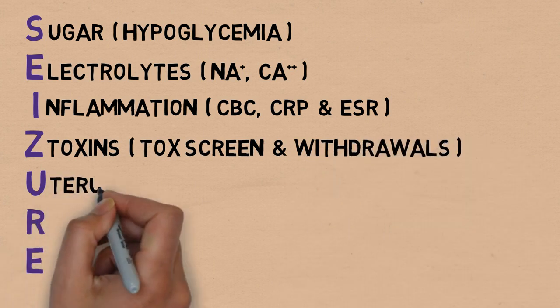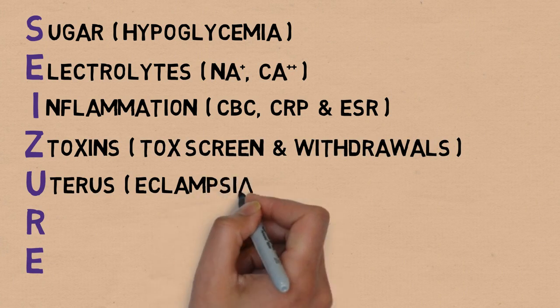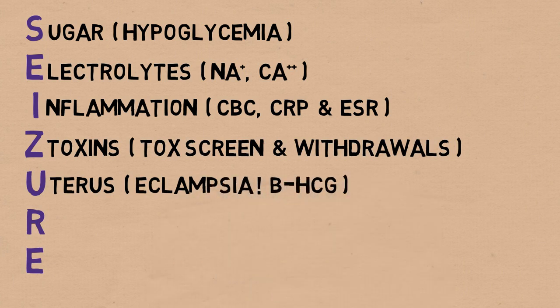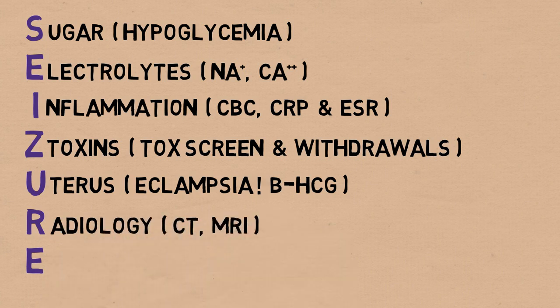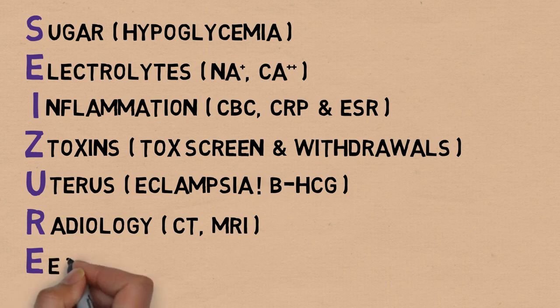U is for uterus, so remember that eclampsia is a thing, and order the beta-HCG for women. R is for radiology, don't forget the CT or MRI that can reveal a mass or some focal changes. And E, again, is for EEG, don't forget that either.